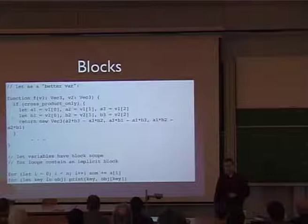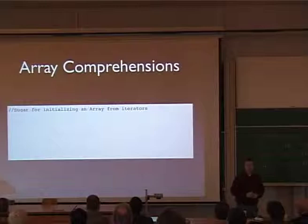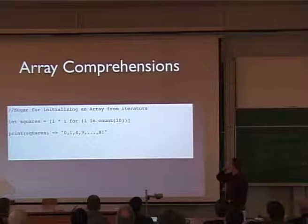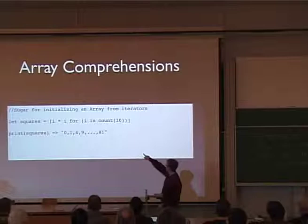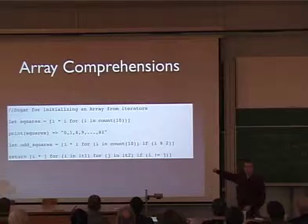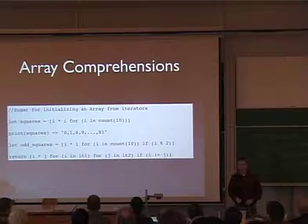For your Python programmers: array comprehension — an easy way to initialize an array. Why write a for loop to shove a bunch of values into an array when you can just do it inline? What we're doing here is generating an array of squares: i times i for i in count of 10. Using iterators to create the first 10 squares, then we can print them out. We can do odd squares, or creative things like creating a packed matrix where the diagonal has been removed.